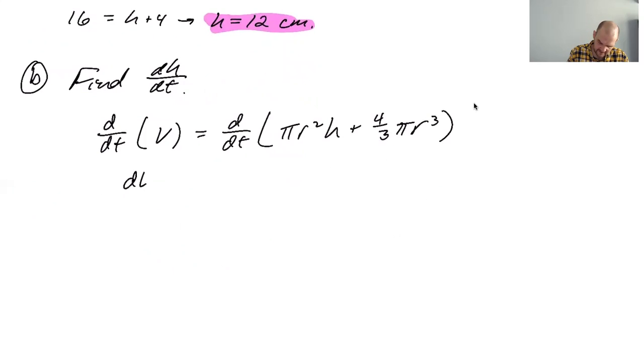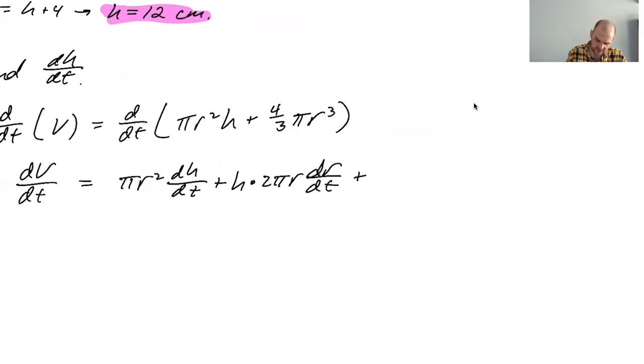DV DT, which I think we were told is going to be pi R squared DH DT plus H times two pi R DR DT, that was the product rule, that's a source of error. First and second, right? And then here we'll get a chain rule thing for four pi R squared DR DT.